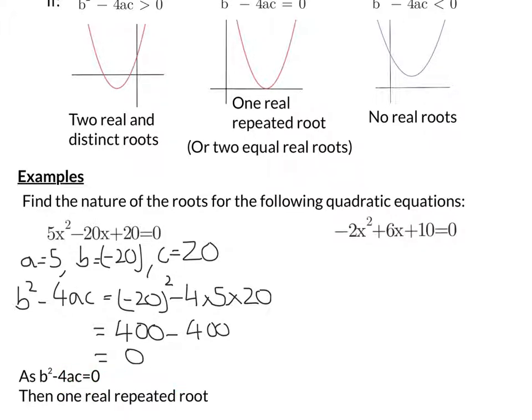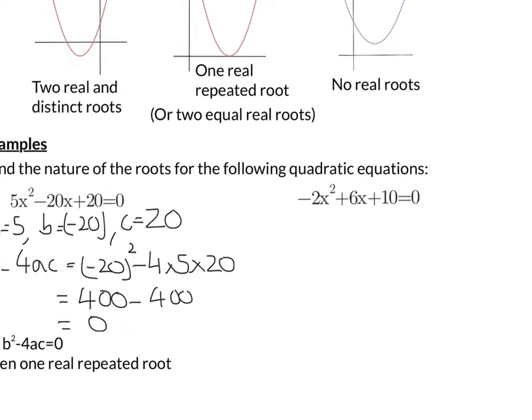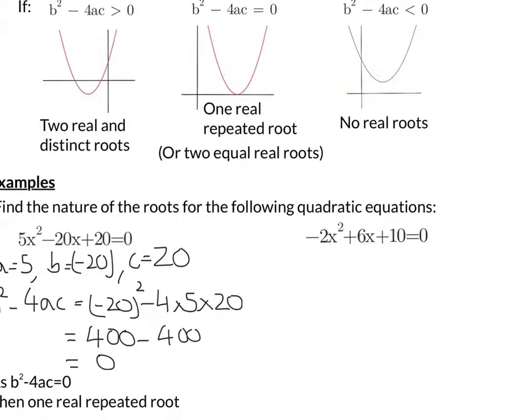Right, let's try the second example here. So the first thing I want to do is write out what all the values are. We're going to have a is equal to negative 2, b is equal to 6, and c is equal to 10.